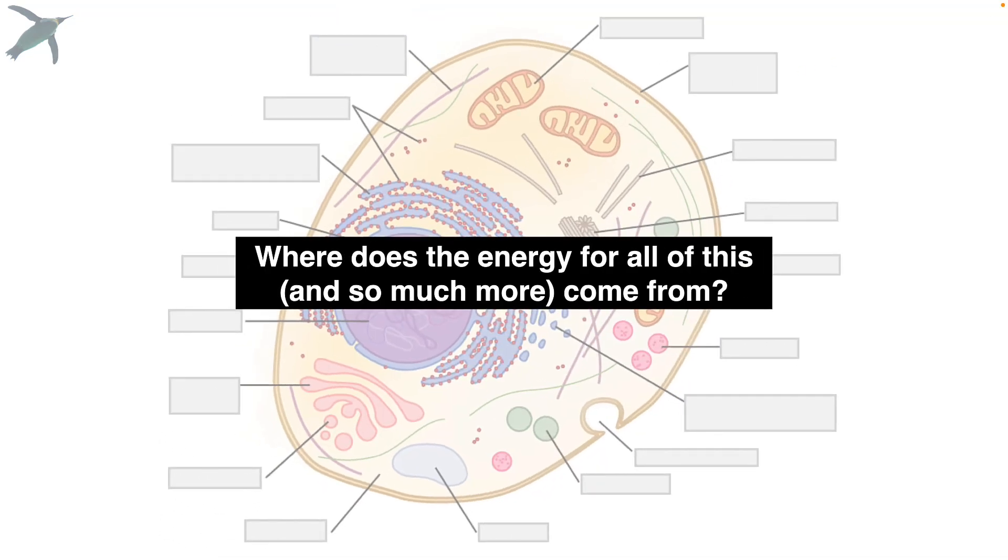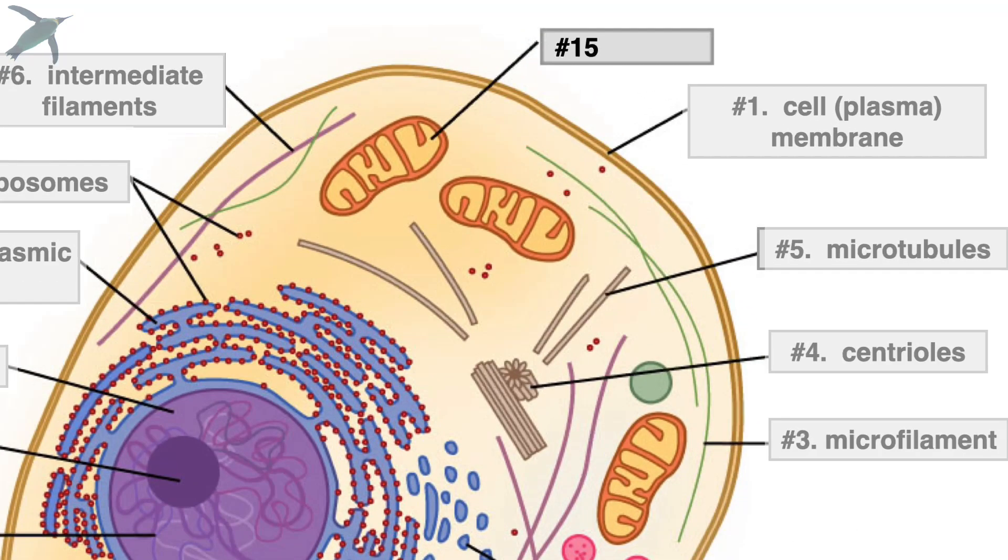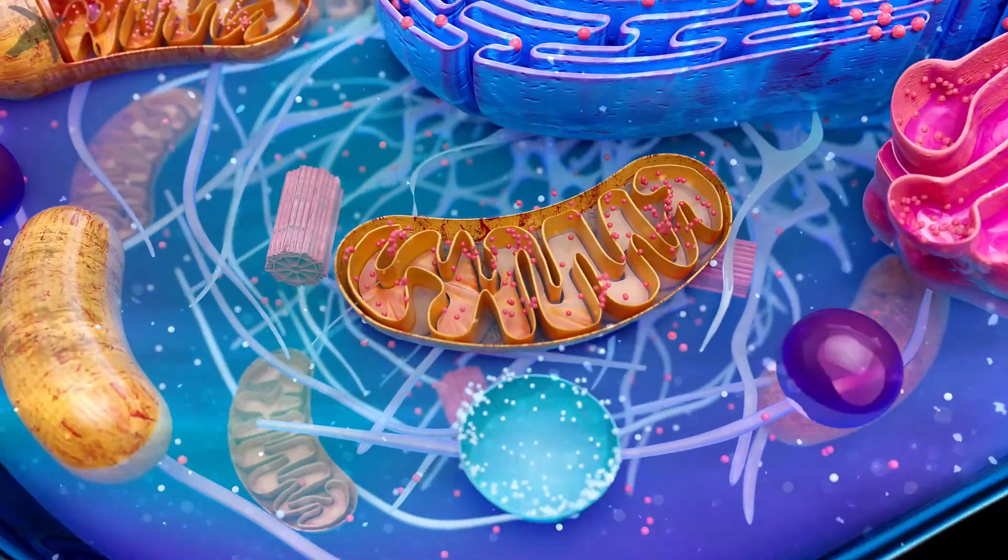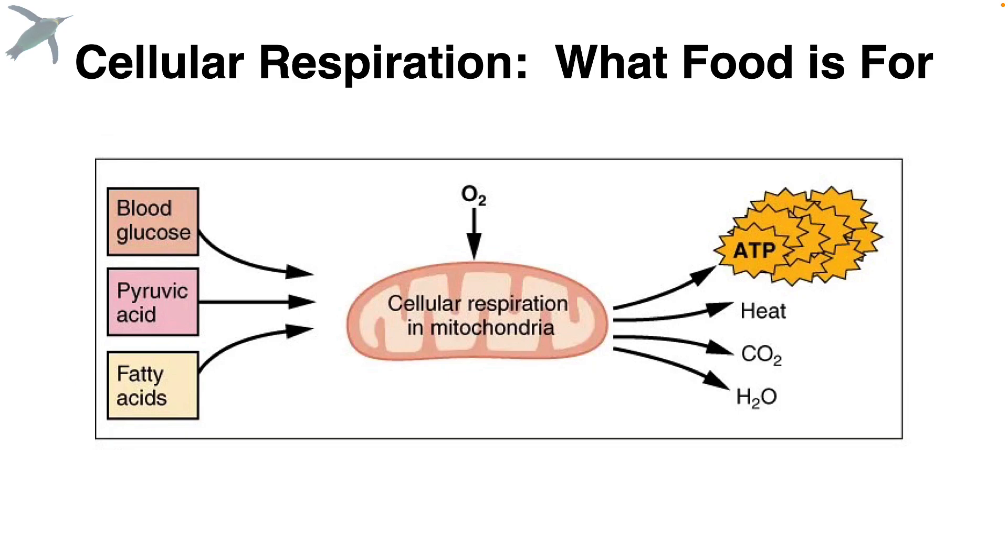We're making good progress here. Where does the energy for all of this come from? You know this one. Number 15, the energy powerhouse of the cell, that is a mitochondrion. And mitochondria are responsible for cellular respiration, basically turning the energy from the food we eat into energy the cell can use in the form of ATP.